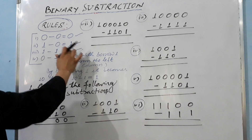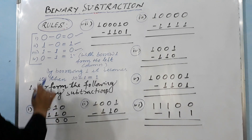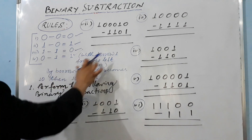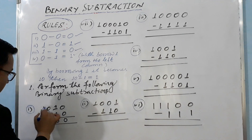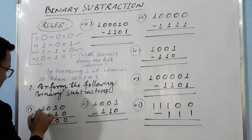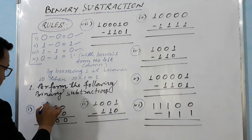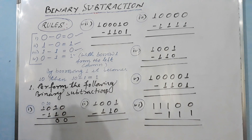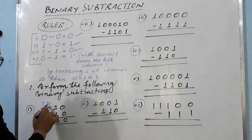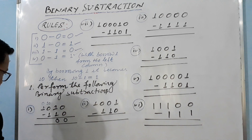Now see here carefully — zero minus one: we have to take a borrow. From the left column we take one as borrow, this becomes zero, and that position becomes 10 (binary). 10 minus one equals one, so we write down one here.